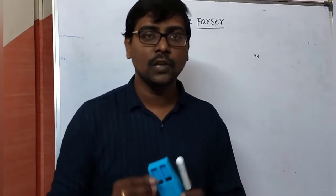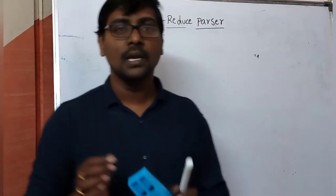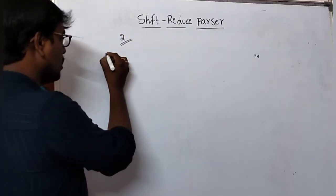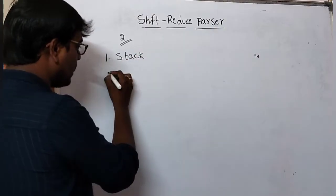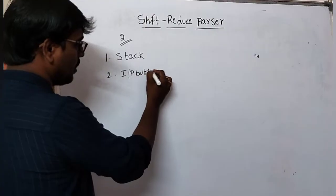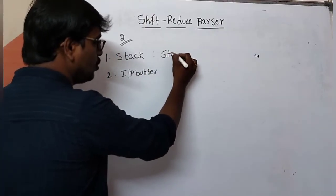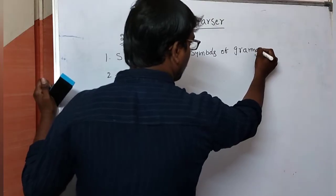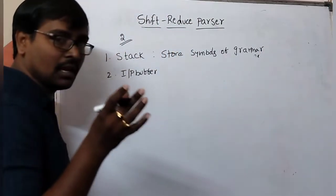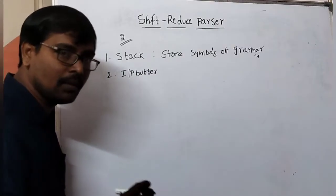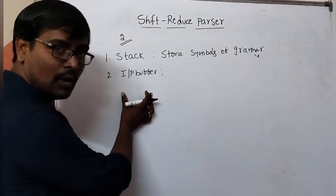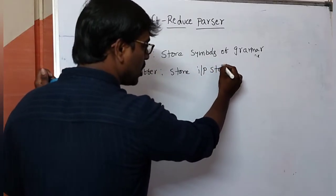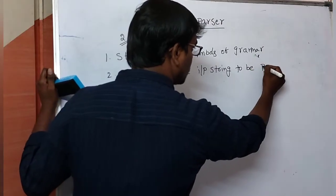Welcome to our channel. In this session we will discuss shift-reduce parser. This shift-reduce parser is implemented using two data structures: one is a stack and the second one is an input buffer. The stack is used to store the symbols of the grammar — whether terminals or non-terminals — that are present within the given grammar.